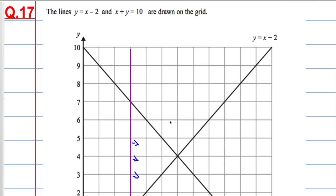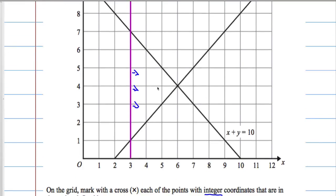OK, so any value over here will be bigger than x minus 2, so I want everything to the left of that line, like so.